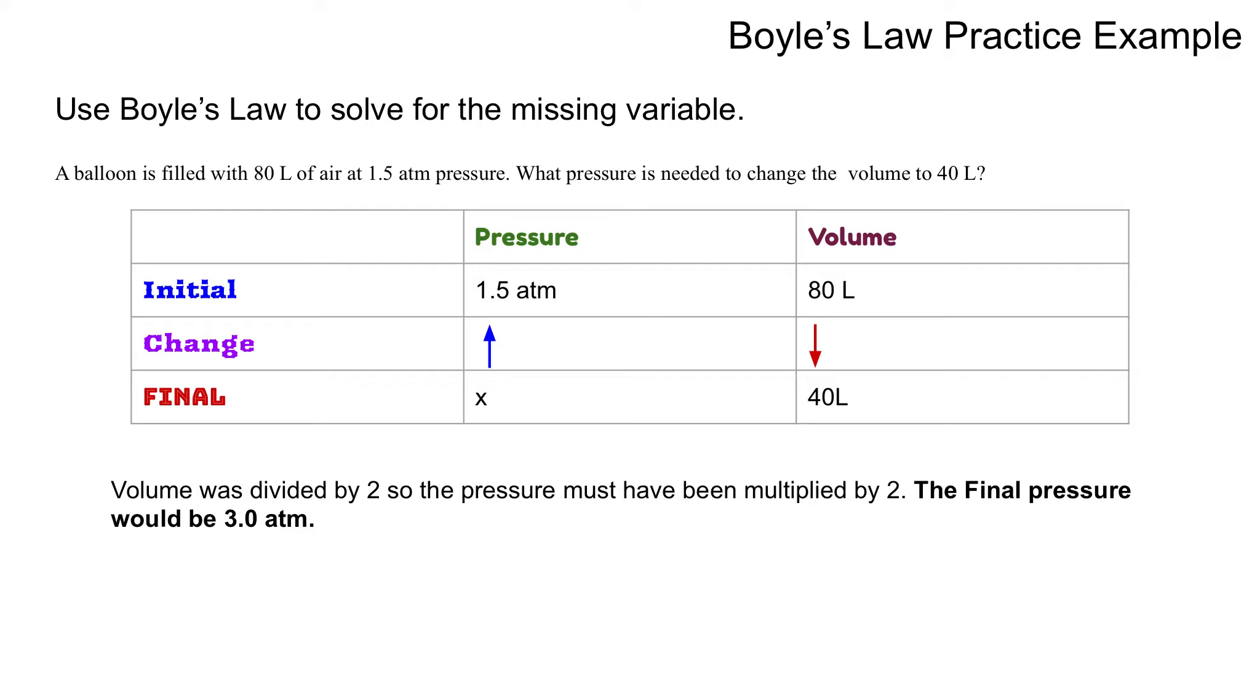Another way, for those of you who do like doing formulas, I have P1, V1 equals P2, or PF, VF. So my pressure initial was 1.5. My V initial was 80 is equal to my X, because I don't know what my final pressure is, times 40. So you can solve this and divide, and you'll end up still getting 3 atm as your final pressure.